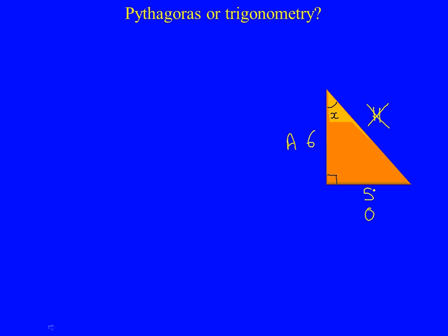So which formula doesn't have a H in? Well, let's write down SOHCAHTOA. Which formula doesn't have a H in? Well, this one's got a H in, CAH's got a H in, so it must be TOA. TOA doesn't have a H in. So we'll draw the formula triangle to help us. TOA.